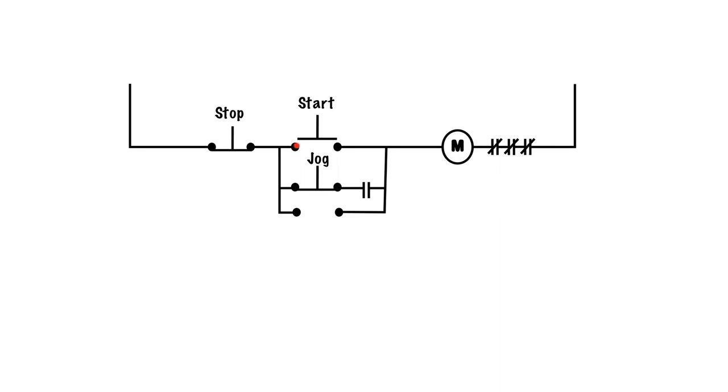So we have our typical stop normally closed push button, we have our start normally open push button, we have our coil, we have our overloads, we have a holding contact that is associated with this M coil. And then we have this two position push button where right now it's in the normally closed position, but if we press down on it it'll make contact with the normally open contacts on that side.